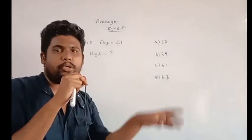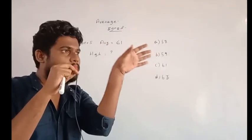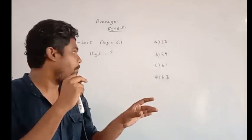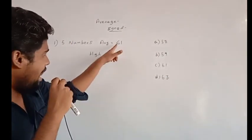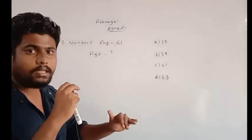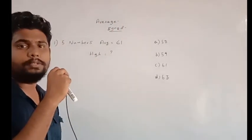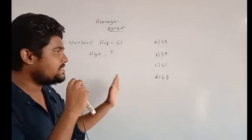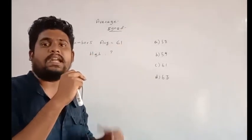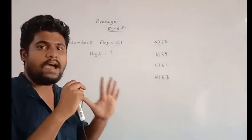This is the concept of average — it is equally distributed. If you have different numbers, you can make them equal numbers. The average is centred, so 61 is the middle number. Numbers smaller than the average are below, and numbers larger are above.